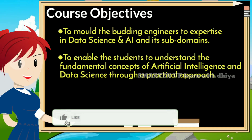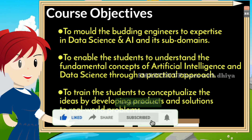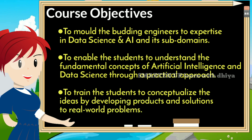Why should you study this course? The objectives are clear: first, Data Science and Artificial Intelligence is a demanding and high-growth field, so you will gain knowledge and expertise. Second, artificial intelligence and data science follow a very practical approach — you will study real-world problems and learn to solve them with concepts and ideas.